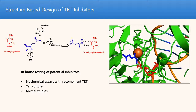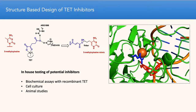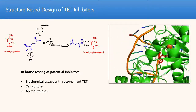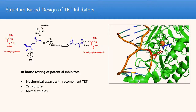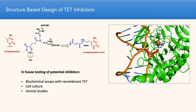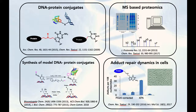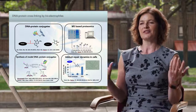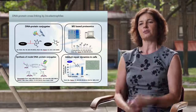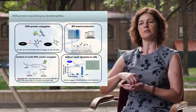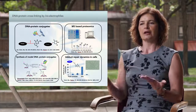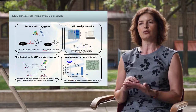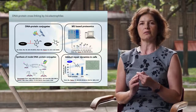Our hope is that this research will generate molecules that can be used as both biological probes of TET activity and as a starting point for future therapeutic agents for cancer. In our fourth project, we investigate DNA-protein crosslinking. In the presence of biselectrophiles or free radicals, proteins can become irreversibly trapped on DNA. We are interested in this process because formation of such DNA-protein crosslinks appears to be associated with aging.